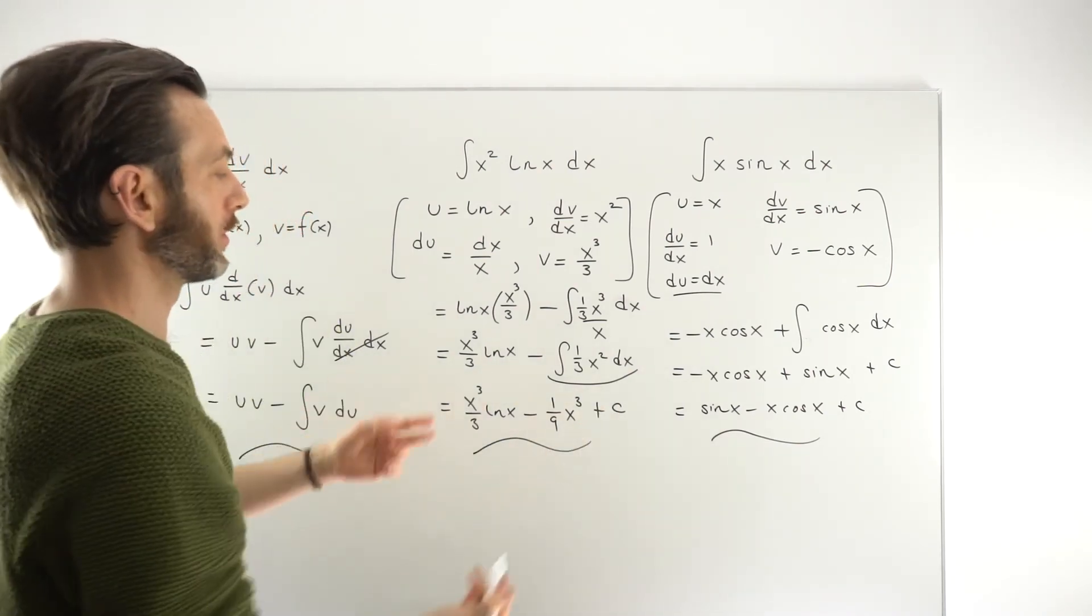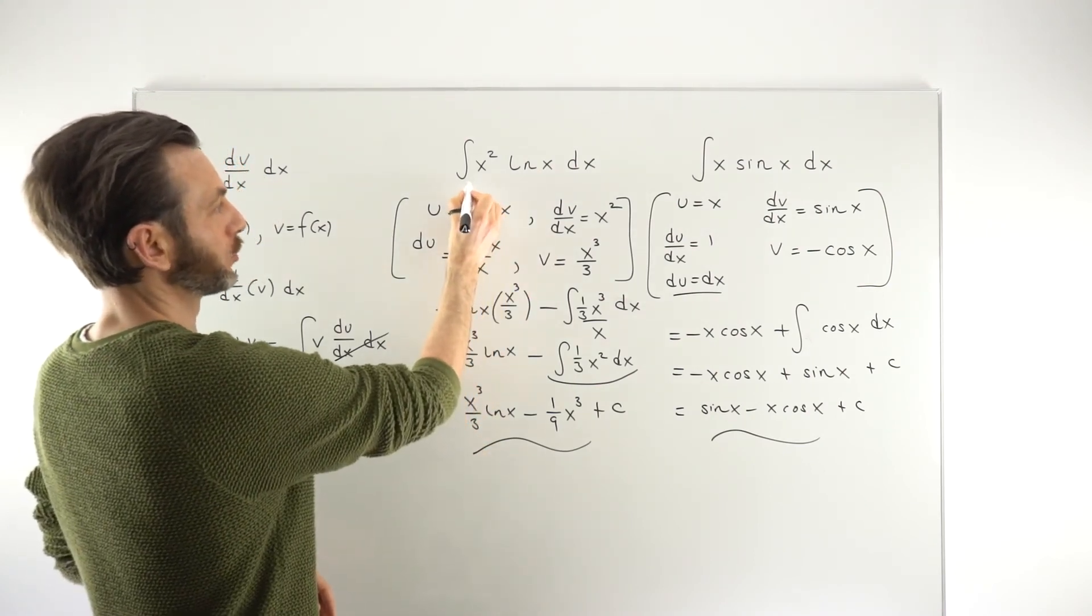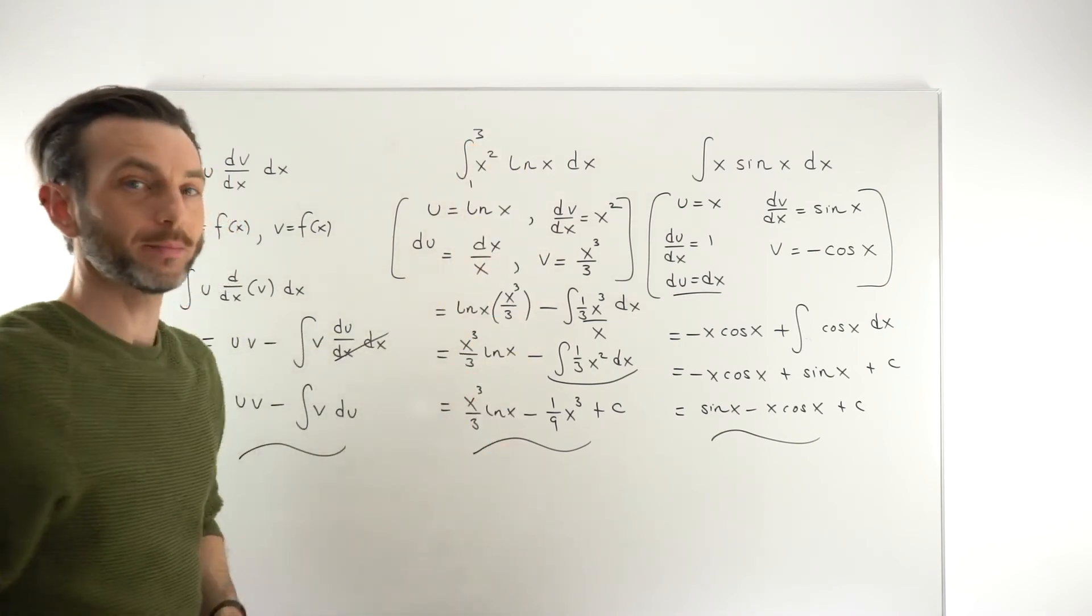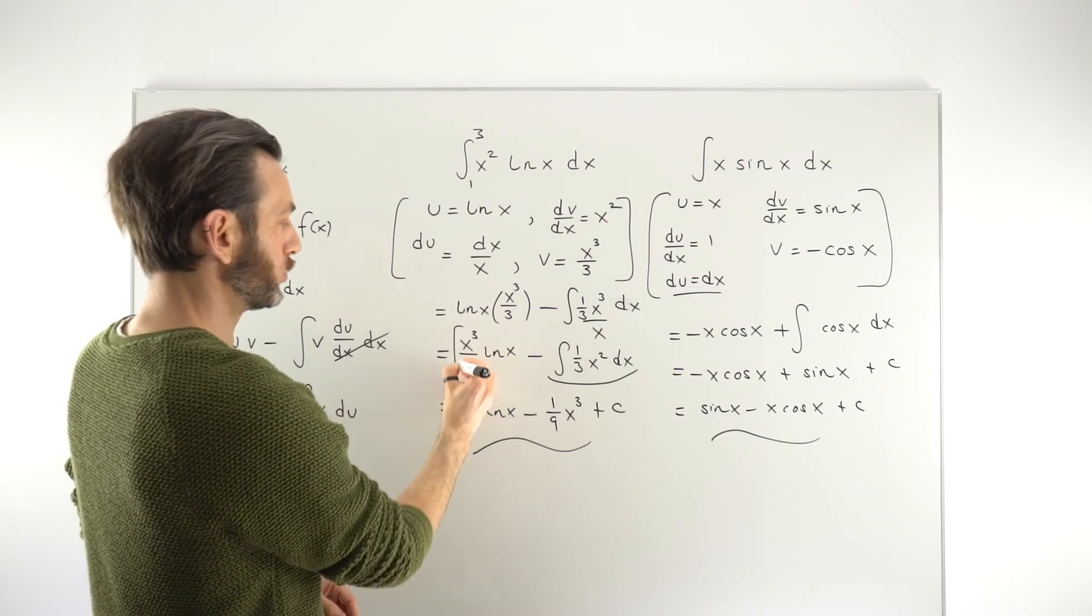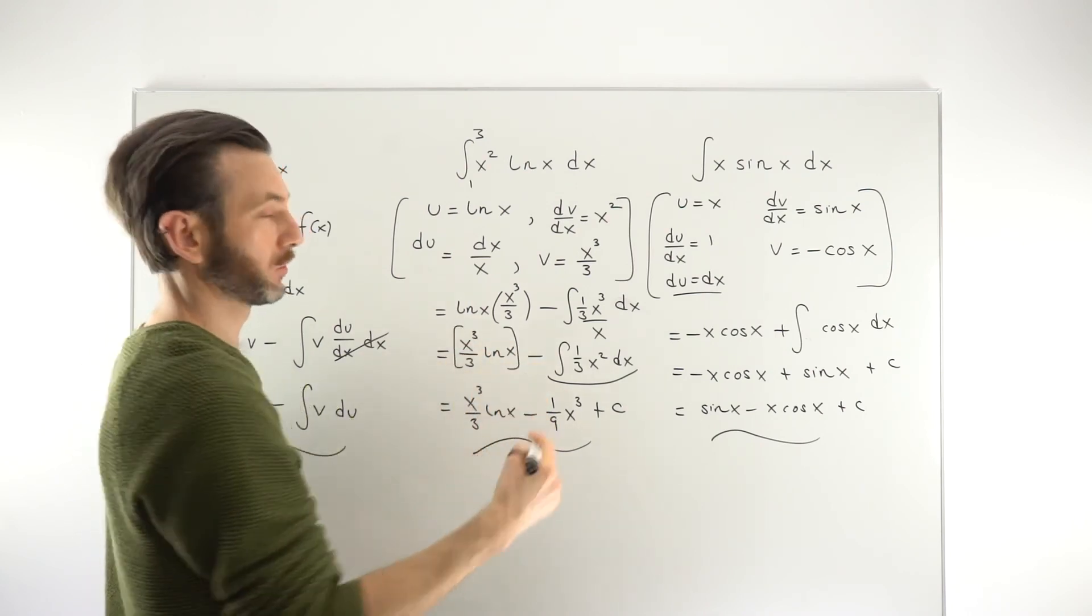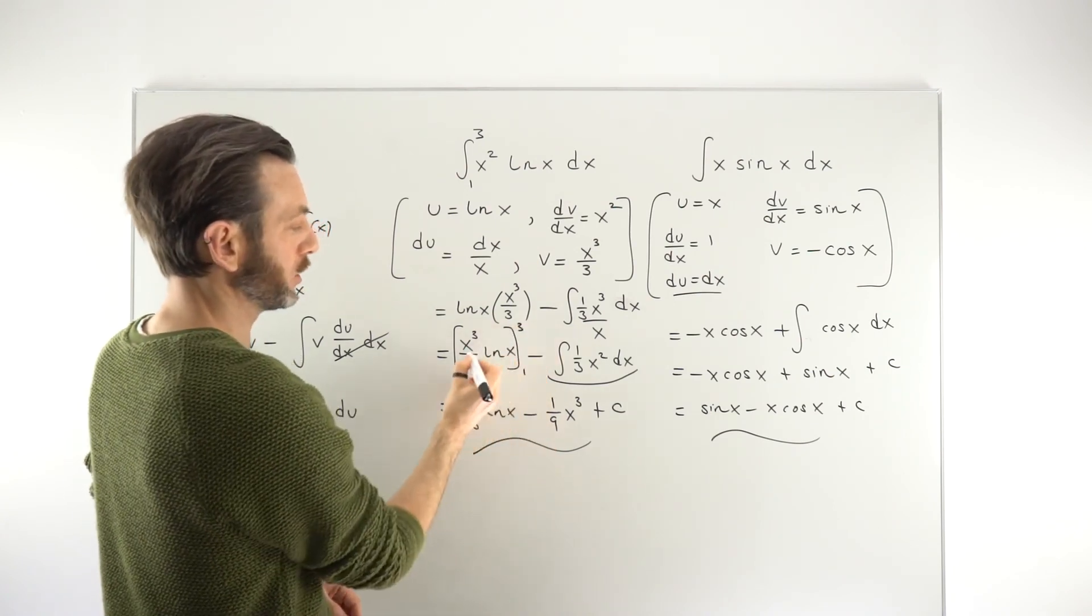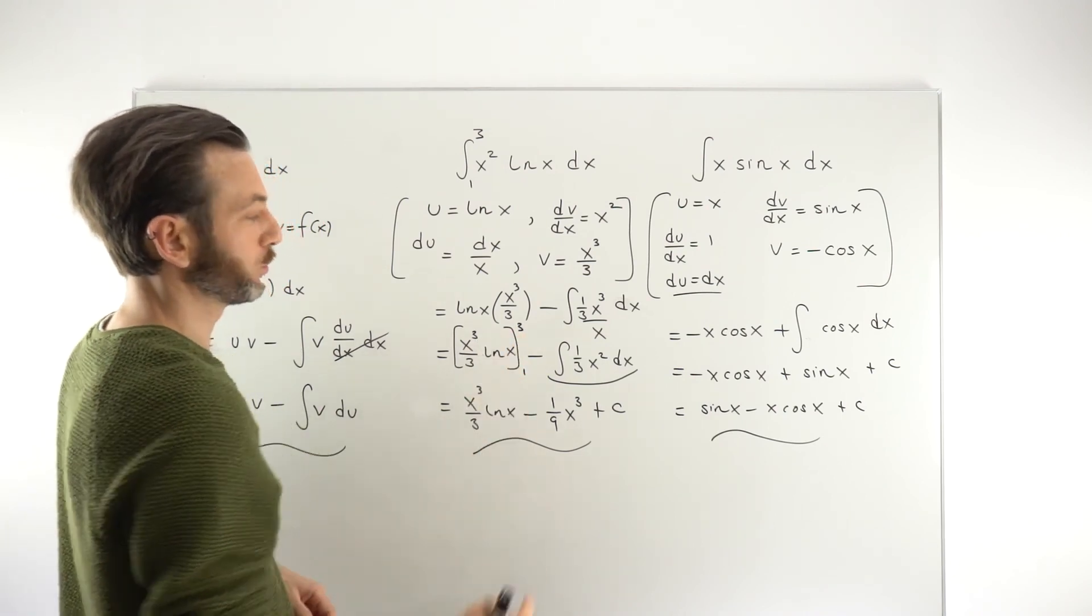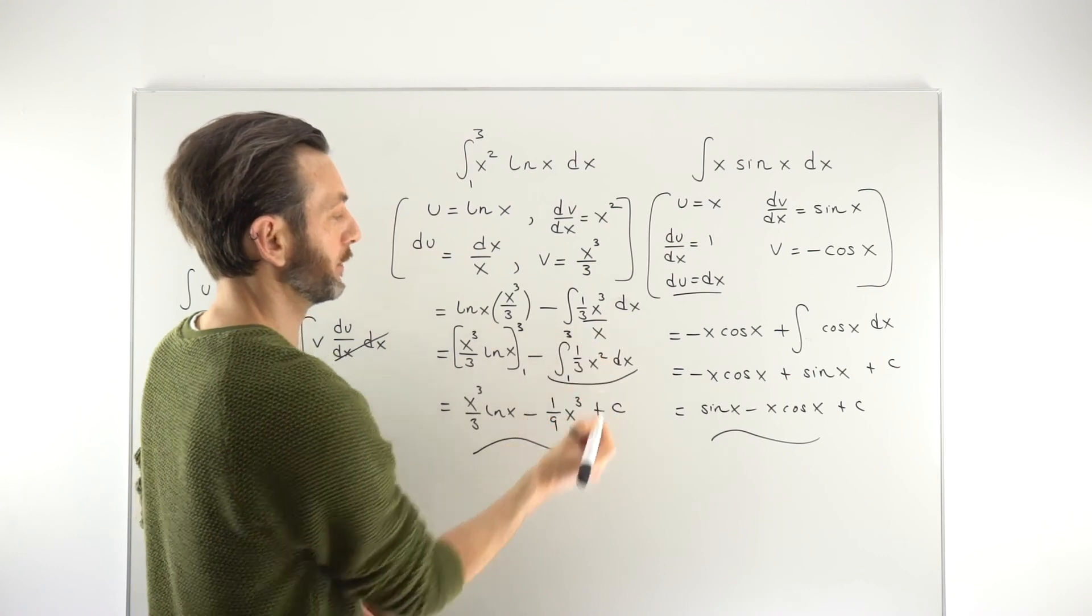So again, I'm not going to run through an example of that here, but if you did make this into a definite integral, so let's say it was the integral between, let's go one and three, all that happens there is you end up putting a one and three onto your square bracket. So I'm assuming you're familiar with definite integrals already. So because this part, the uv part has already been integrated, we put our limits one and three on there, and then we just perform the second integral between the limits one and three.